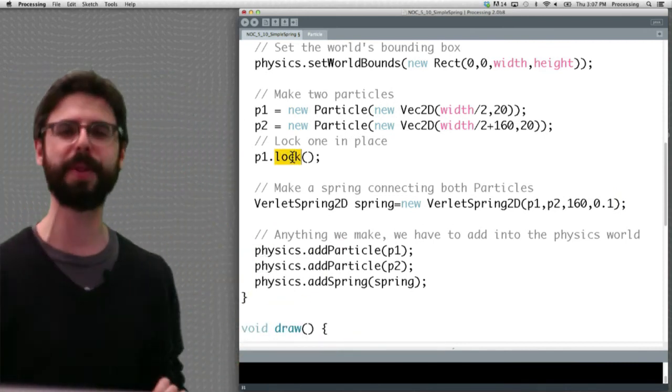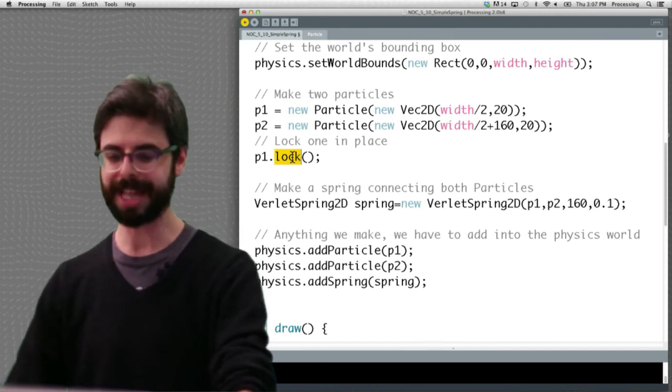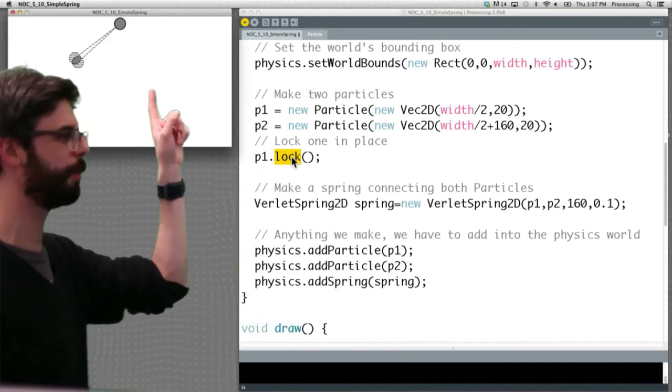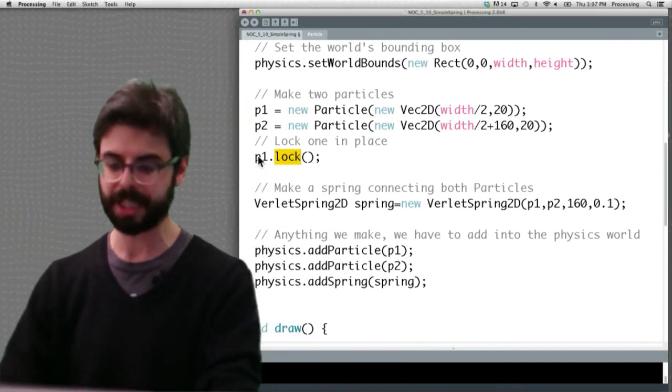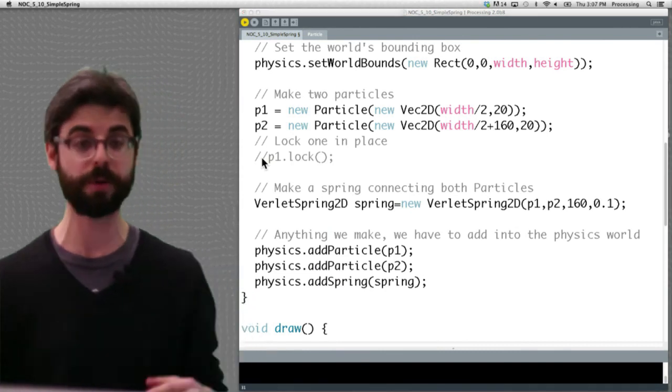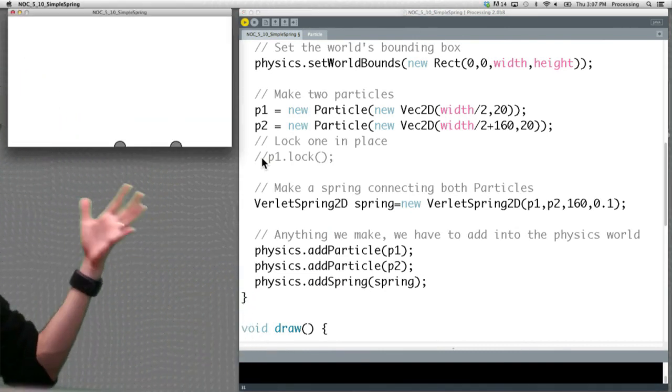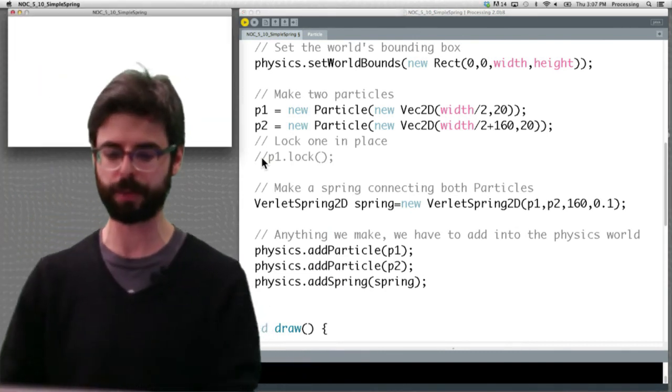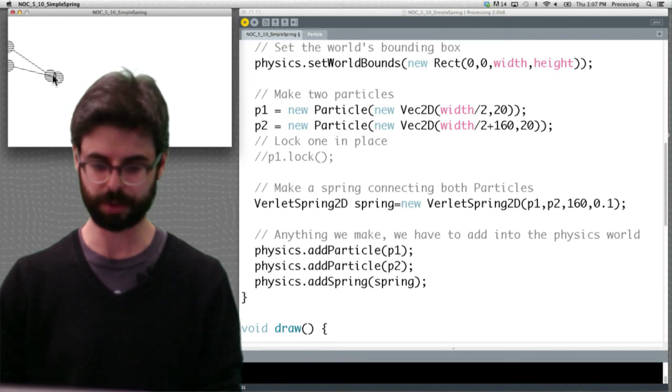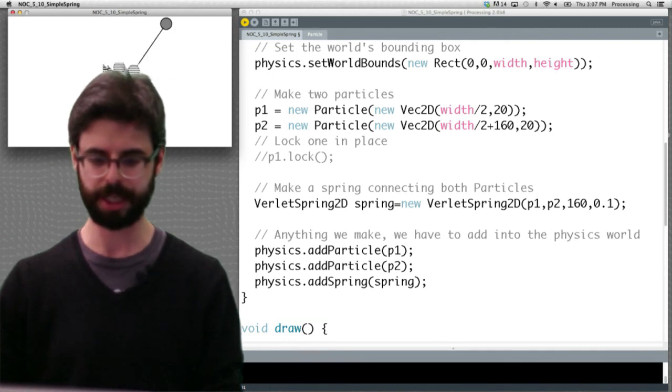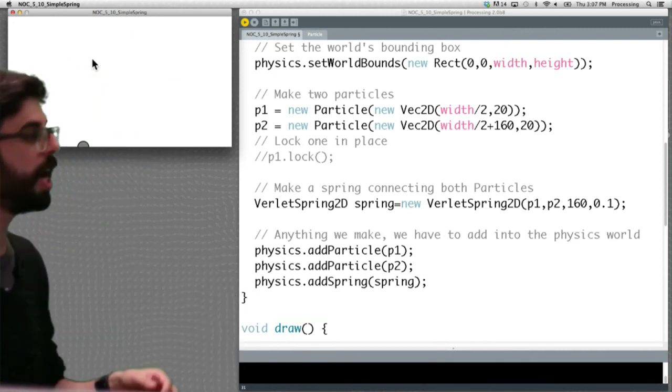Another thing that's important to realize is that there's a lock function. So you can lock a particle in place so that it can never ever move. And that's what's happening here with particle number one. Particle number one is locked. If I were to comment out this line of code and run it again, they just fall because it's not locked in place and they're both responding to gravity.